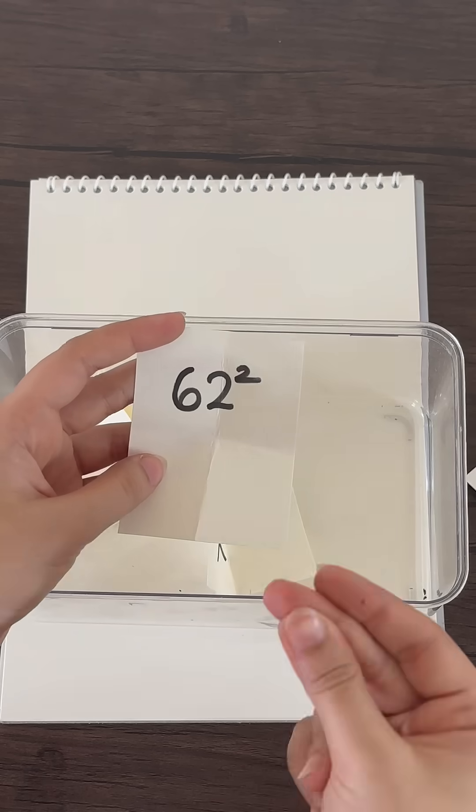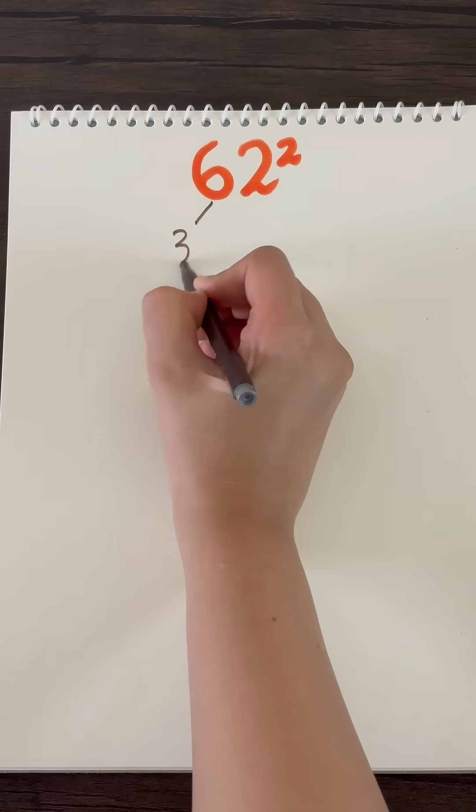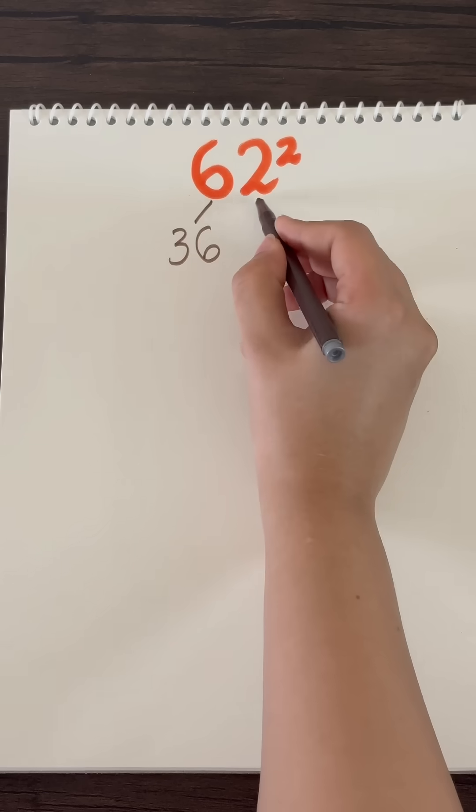So let's begin and see what's the first number. Okay, it's 62. Let's do it. What's the square of 6? It's 36. What's the square of 2? It's 4.